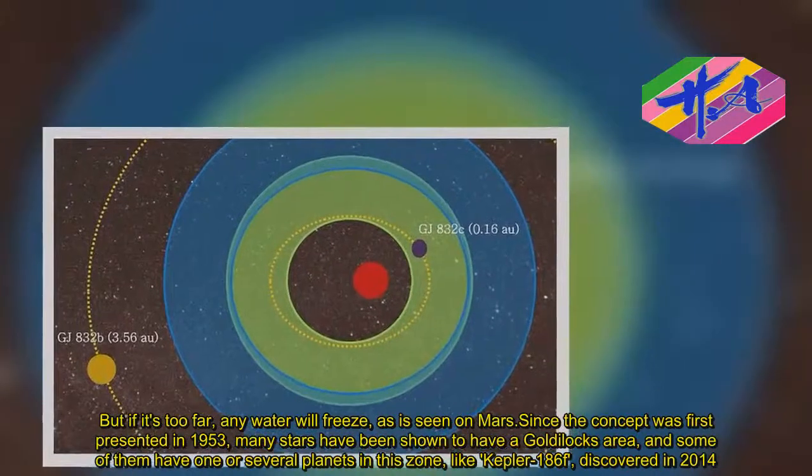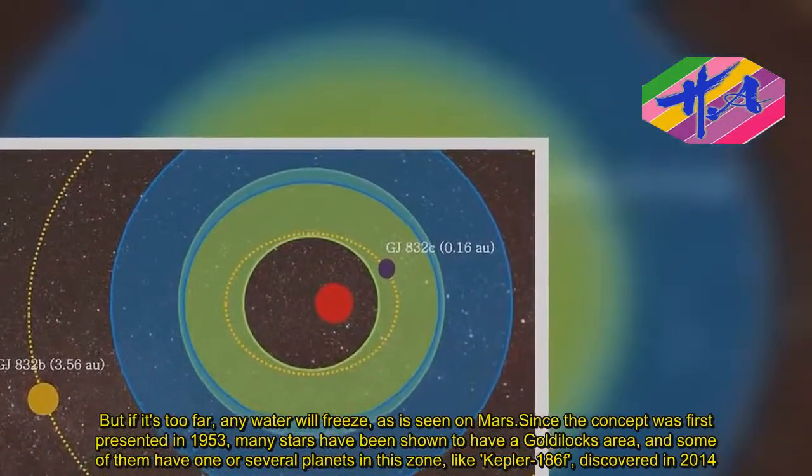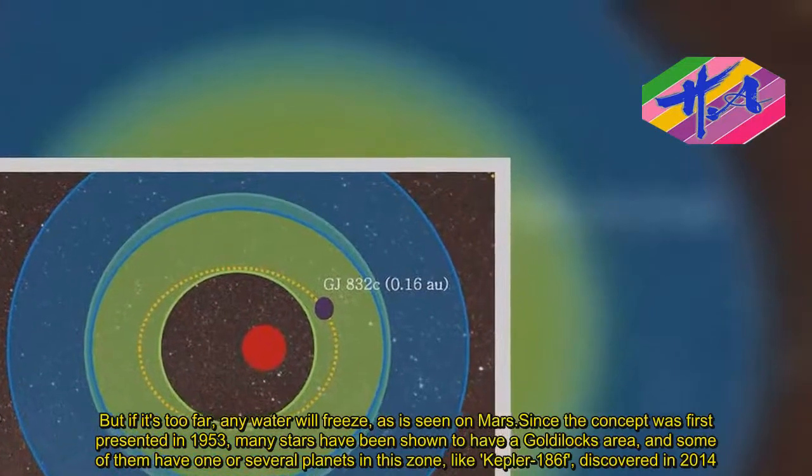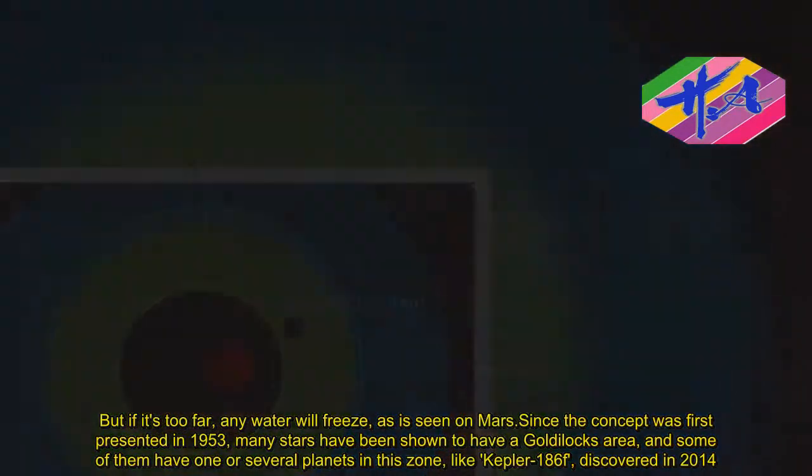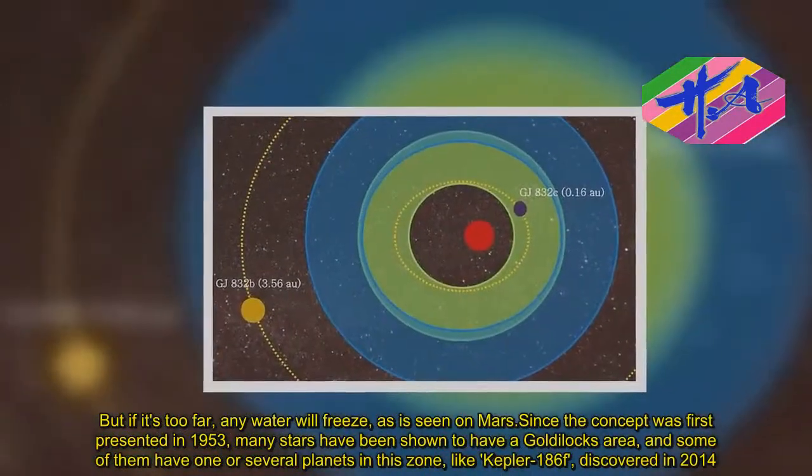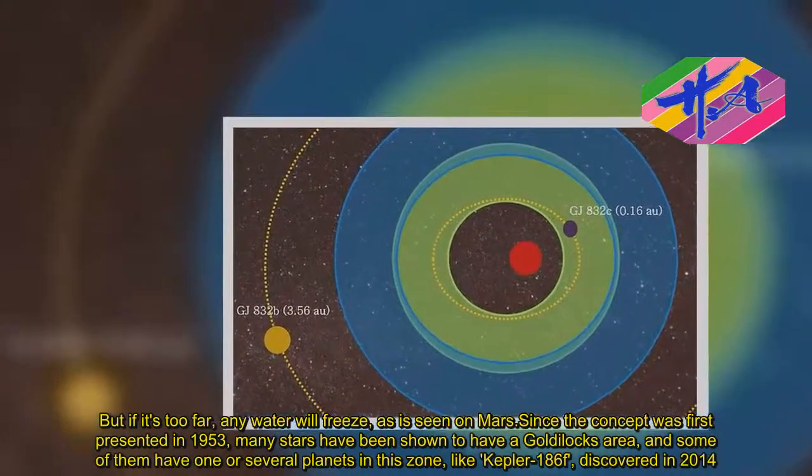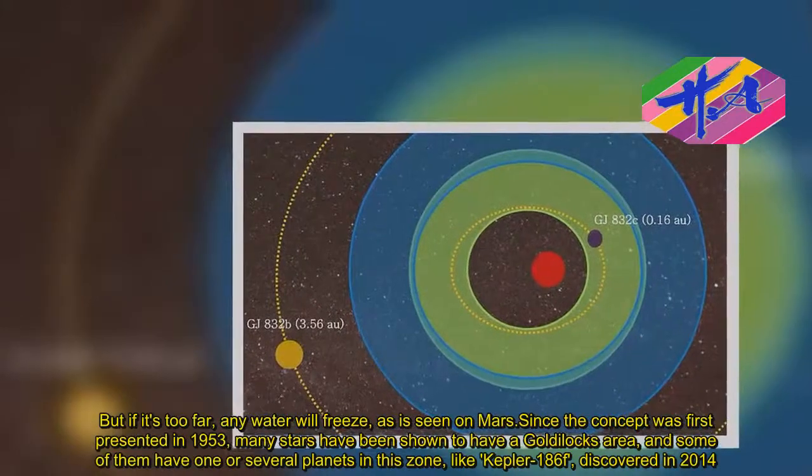Since the concept was first presented in 1953, many stars have been shown to have a Goldilocks area, and some of them have one or several planets in this zone, like Kepler 186f, discovered in 2014.